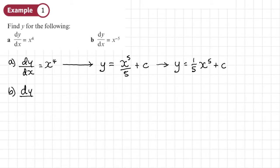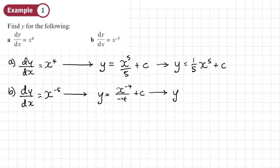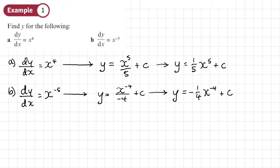Part b, we have dy/dx equals x to the power of negative 5. We add 1 to the power, so that gives x to the power of negative 4, and we divide by that new power. With the constant of integration, we can write the answer as negative one quarter x to the power of negative 4 plus C. You can differentiate your answer to check you get back to the original — differentiation is always easier. Negative one quarter times negative 4 gives 1, and then subtracting 1 from the power gives negative 5, and the C disappears. So differentiating your answer is a useful check.